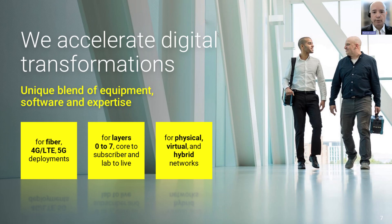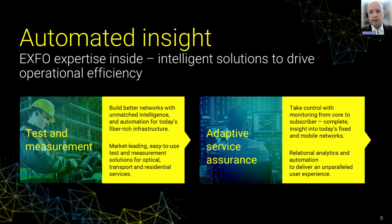Basically what we do increasingly with customers is accelerate digital transformations. That means we address all technologies, network types and layers to help our CSP customers transform the way they manage their services and network. Almost everything we do now is focused on automation — automating tests, measurements and operational processes mainly with our customers. We categorize ourselves into two main types of solution: test and measurement solutions, and adaptive service assurance solutions, or ASA.